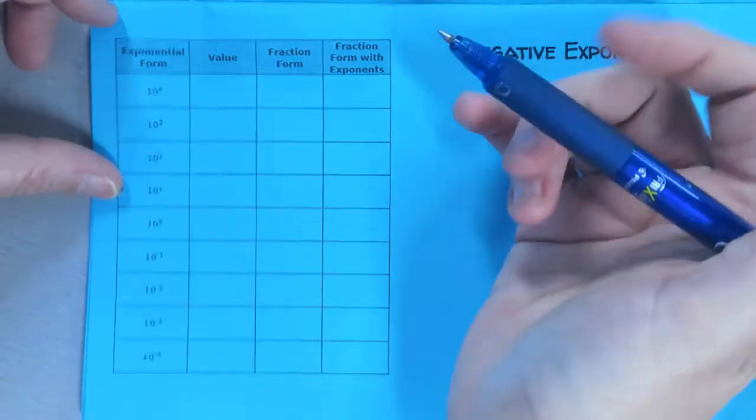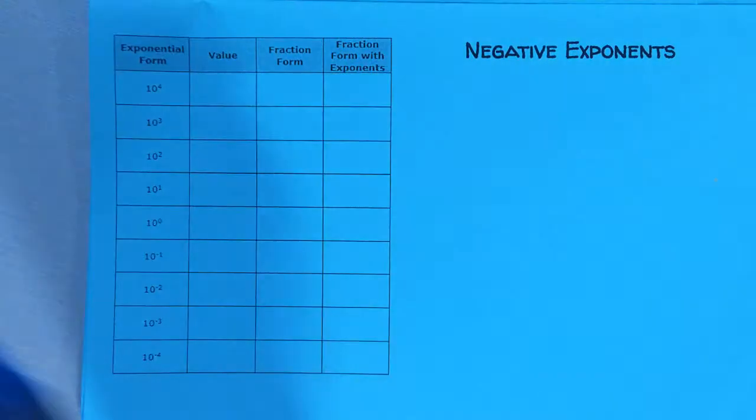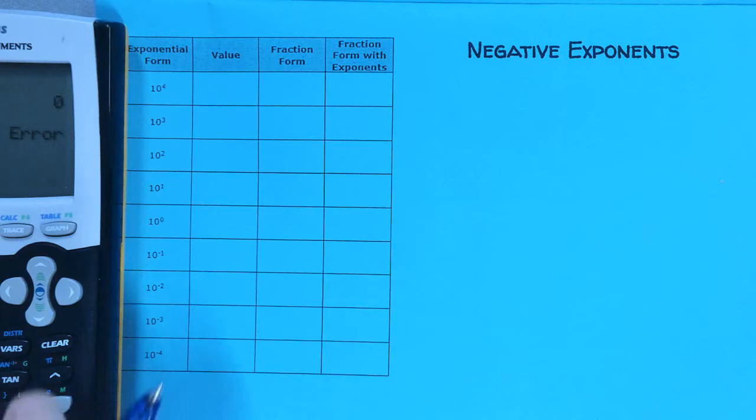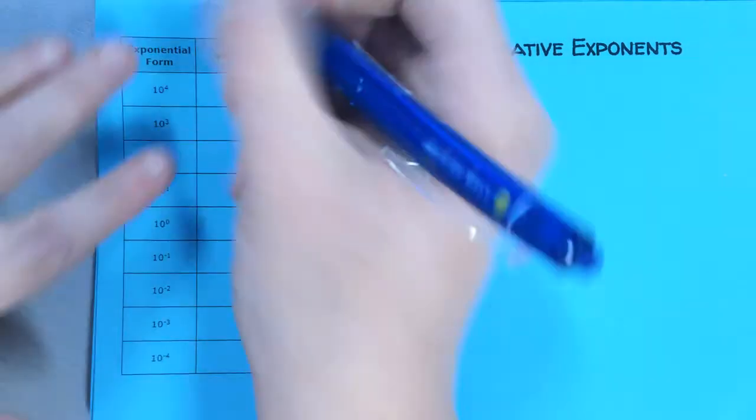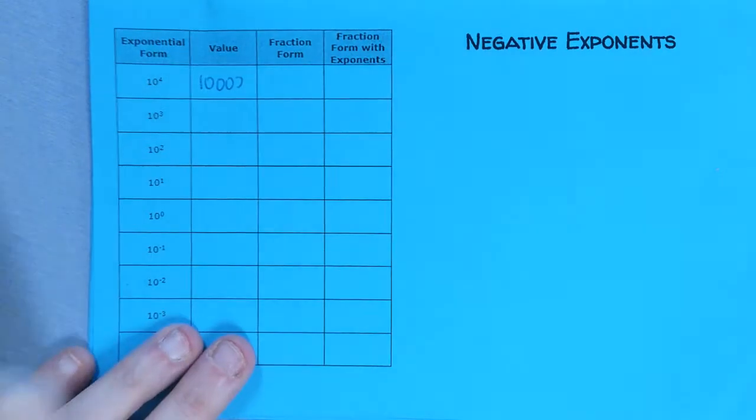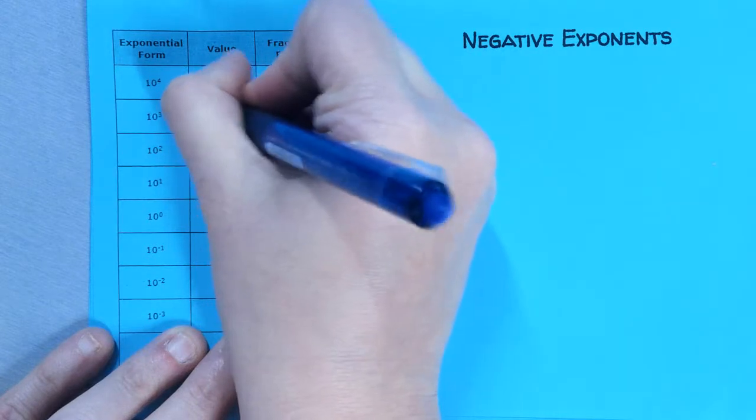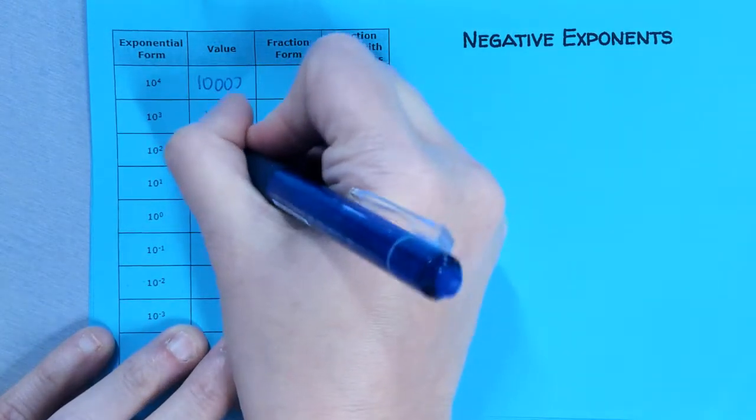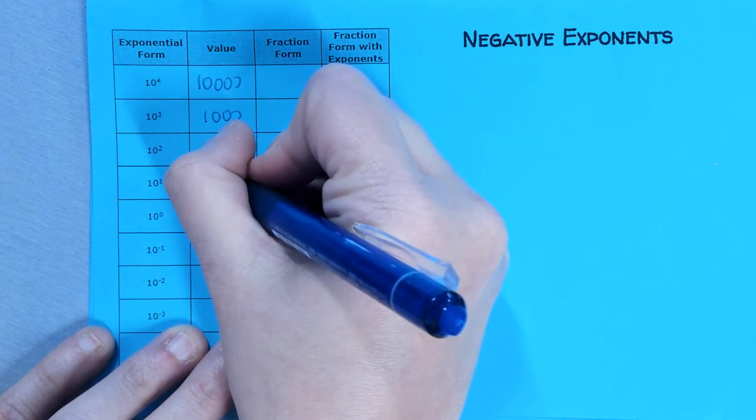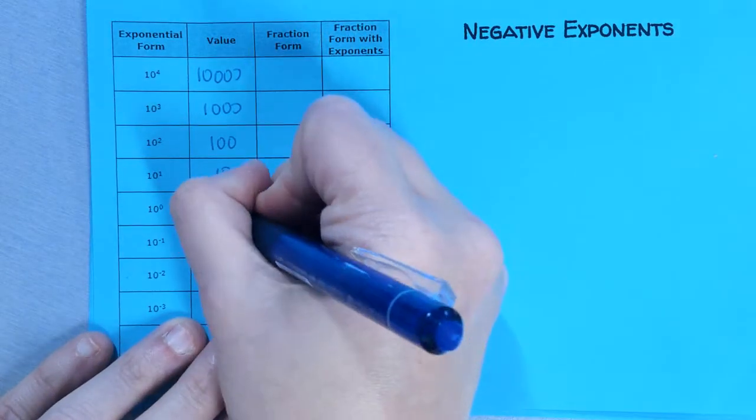If I put 10 to the 4th in my calculator, it gives me 10,000. 10 to the 3rd power gives me 1,000. 10 squared is, I'll just tell you, it's going to give me 100. 10 to the 1st is going to give me 10. 10 to the 0, as we just learned, is going to give me 1.